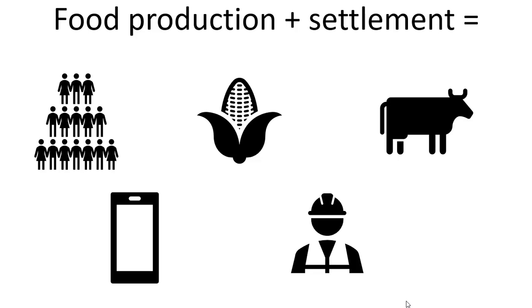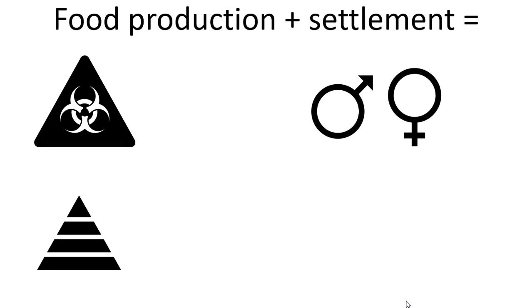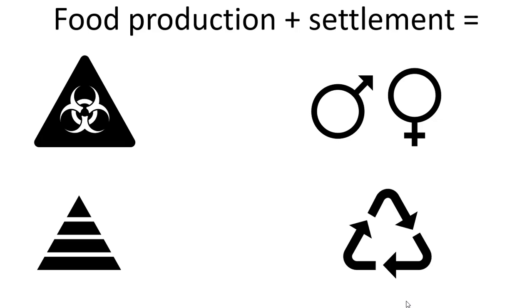However, not everything about settling down and growing your own food was awesome. The combination of food production and settlement also led to the increased spread of diseases, especially those that jumped from animals to humans living in close proximity. Social stratification and the beginning of wealth disparities emerged as some began to accumulate more valuable stuff than others. Gender division appeared as women became increasingly relegated to the home to have and raise children, while men performed what was deemed more important work. And finally, environmental degradation caused by farming — it's estimated the world has lost 50% of its trees since humans began settling down to farm.